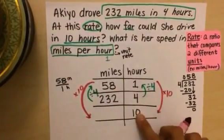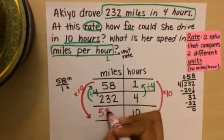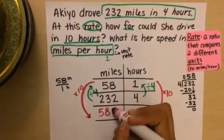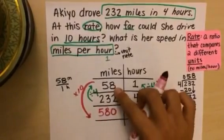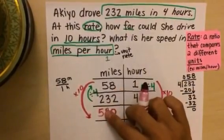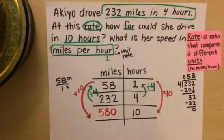All right. I know that whenever I multiply anything by 10, it's the same thing as shifting them over one place value. So my tens place becomes the hundreds place. The ones place becomes the tens place. And now I have a zero in the ones place. So there we go. We've gone ahead and we've solved our problem using ratio tables.